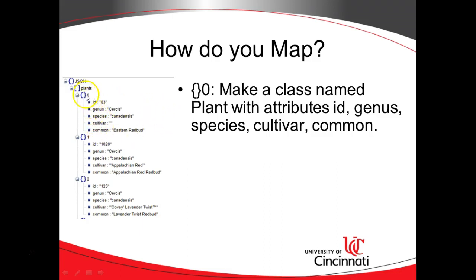That's going to cover each of these repeating sets. One class called Plant, and items 0, 1, 2, 3, and so on each represent an object of that Plant class.